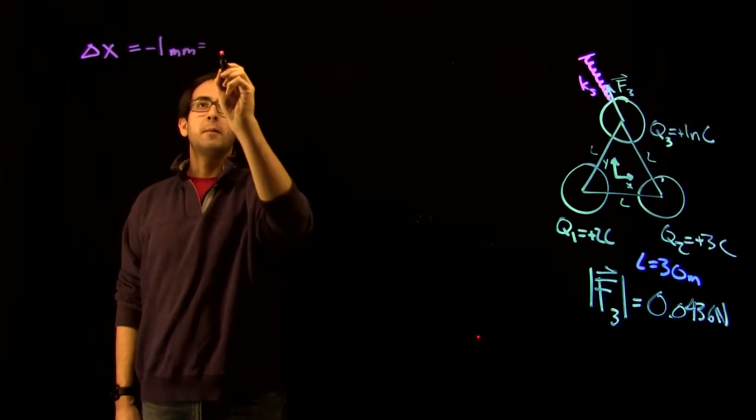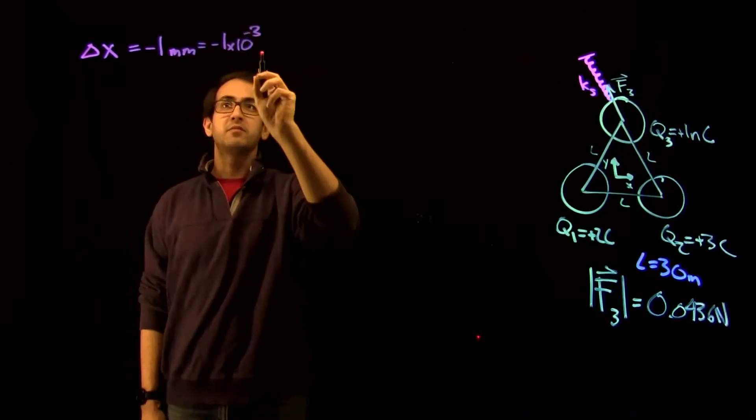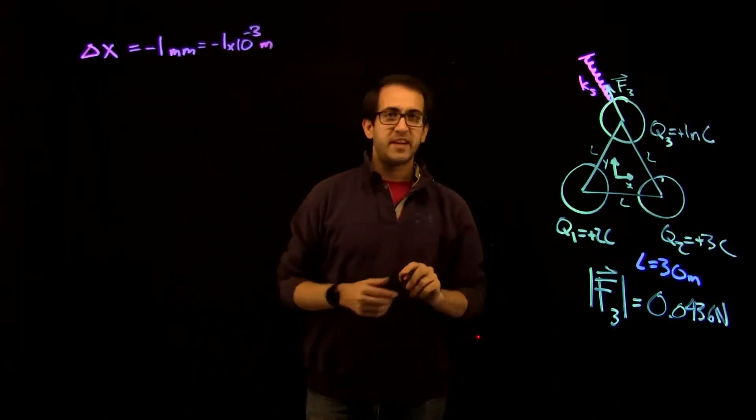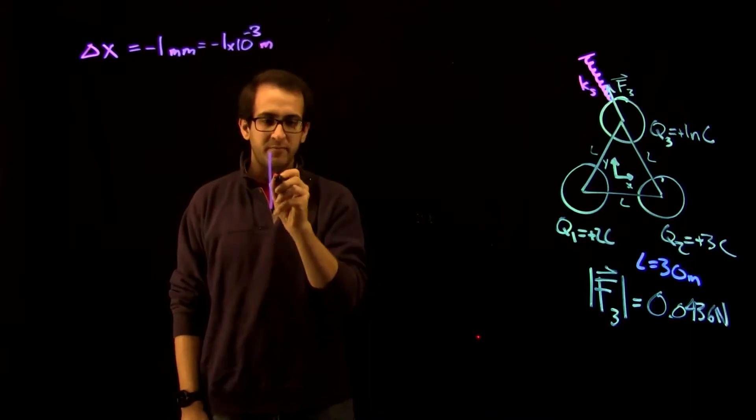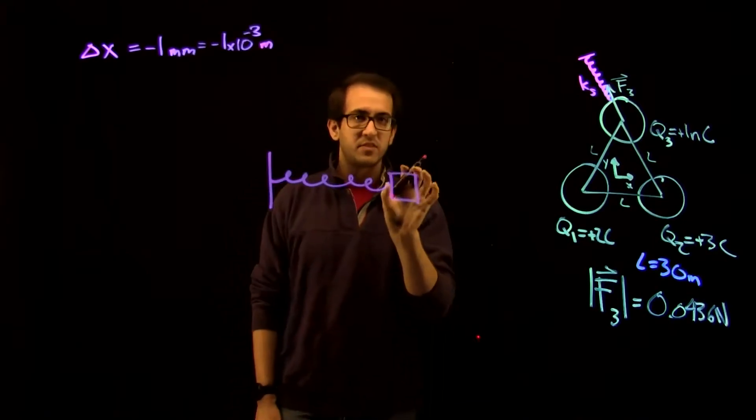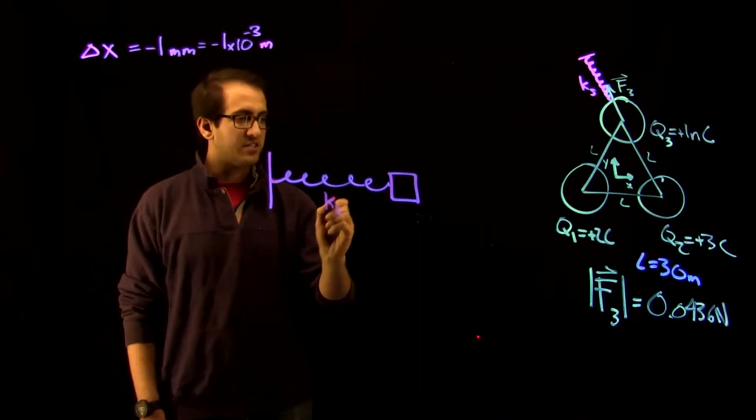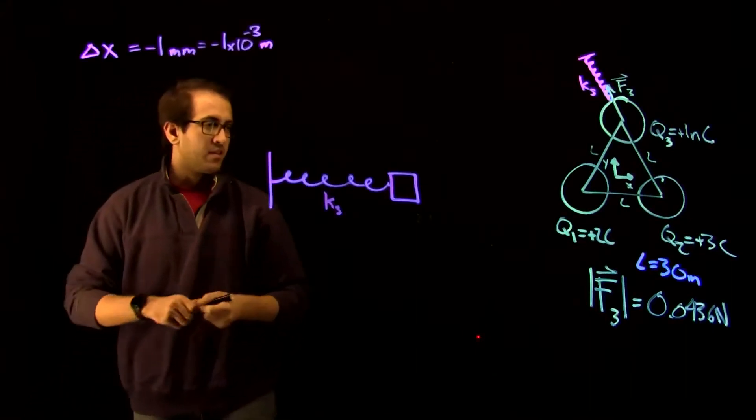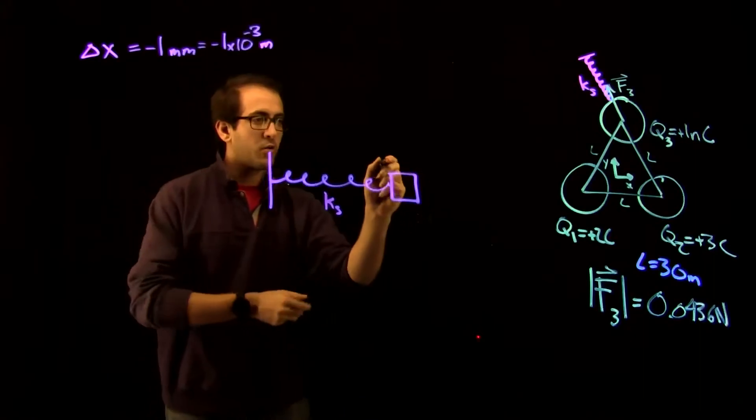We also know that delta X is equal to minus one millimeter, or minus one times ten to the minus three meters. So why is this negative? So what we're going to do is we're going to review springs briefly. Every spring is some object on the rest of the spring here. So this spring has a spring constant Ks. And we're going to define the central point of a spring, so the place where the spring is neither compressed nor extended. We're going to call that zero.